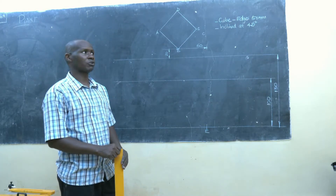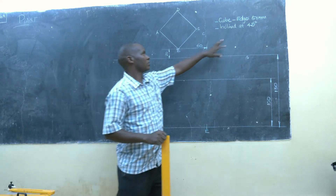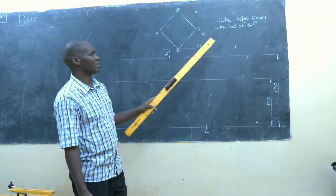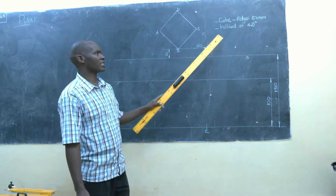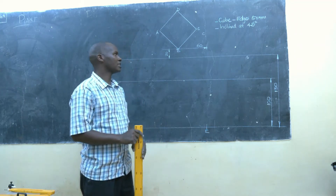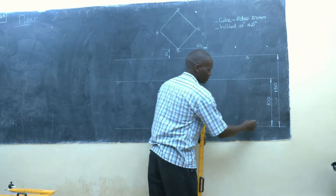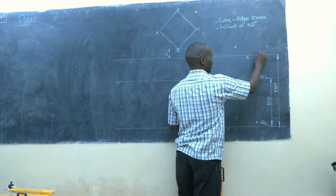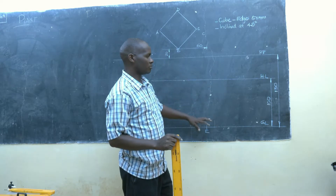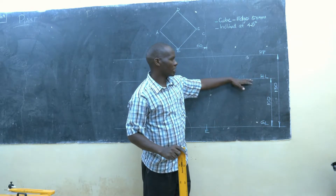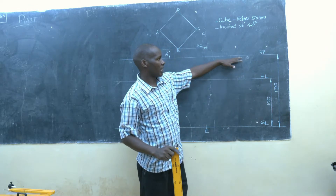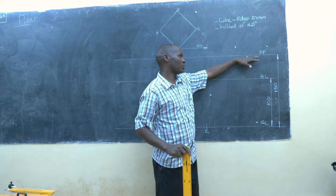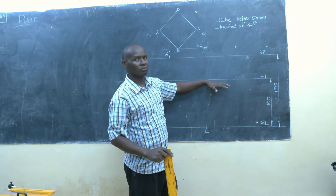For this case we are given a cube with edges of 50mm. The cube is inclined at an angle of 45 degrees. We are given the ground level, the horizon level, and the picture plane. The horizon is 100mm from the ground level, and the picture plane is 130mm from the ground level, such that the PP and the HL are 30mm apart.